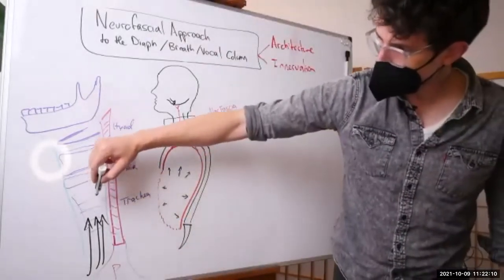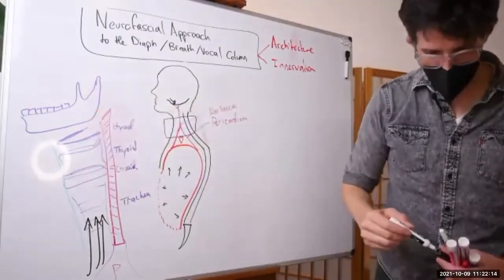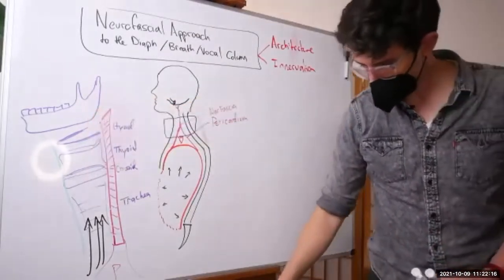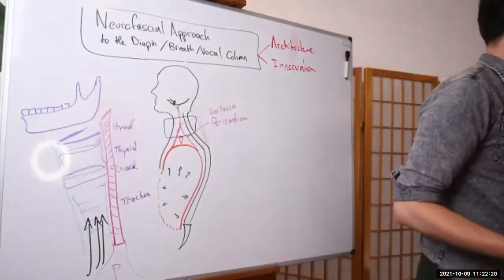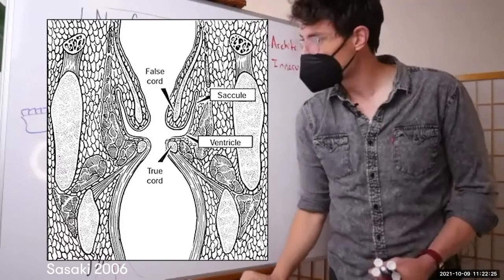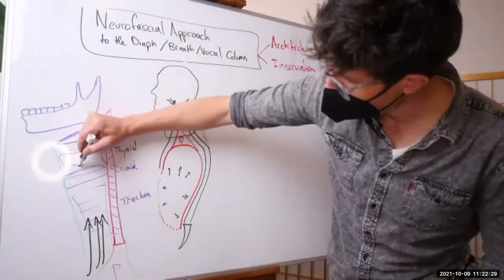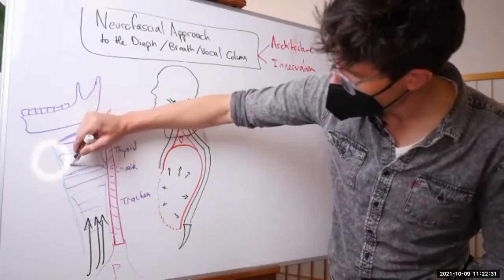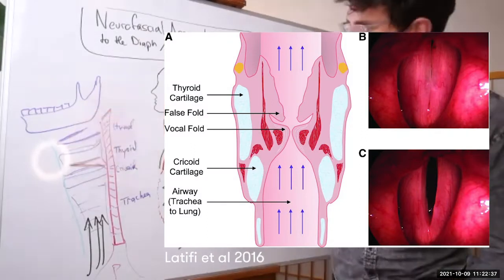And that column of air comes up through here into a specialized sphincter that we call the vocal folds. Inside the bottom of the thyroid cartilage and connected with the cricoid cartilage are the vocal folds.